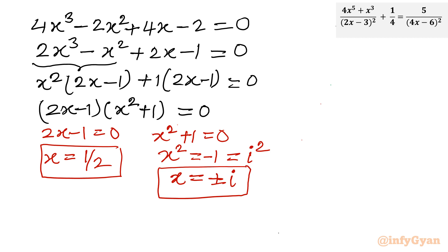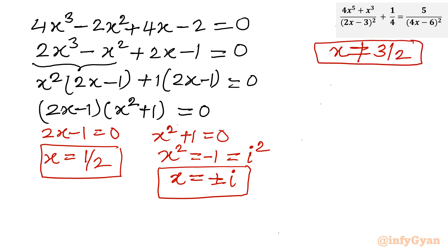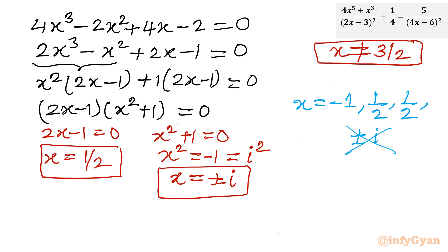So our complete solutions for the quintic equation are: x equals negative 1, x equals one half with multiplicity 2, and x equals plus or minus i. The exempted value was x cannot be 3 over 2, and none of our solutions equal 3 over 2. The complex solutions plus or minus i are rejected since we need real solutions only.